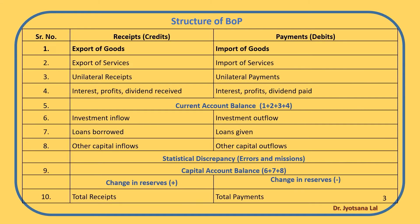Now we'll try to understand the structure of BOP with the help of this table. The Balance of Payment account is maintained in the standard double entry bookkeeping system. This means all international economic transactions are recorded in the form of receipts or credits and payments or debits. Whatever amount we receive from other countries is recorded in receipts, and whatever we pay to other countries is recorded in payments or debits.